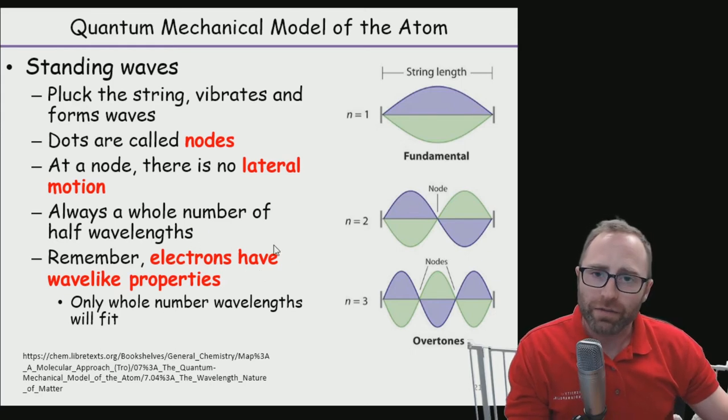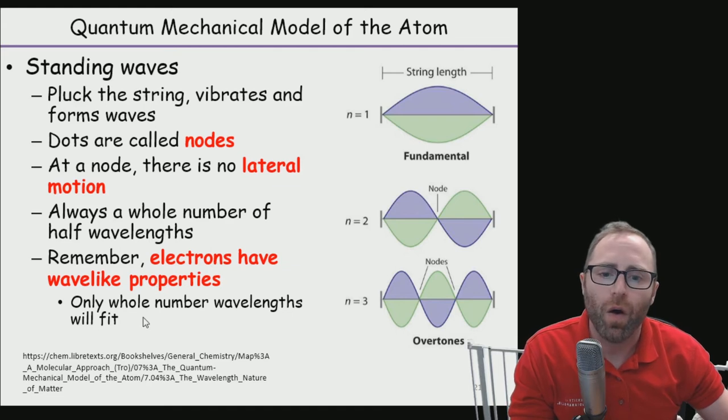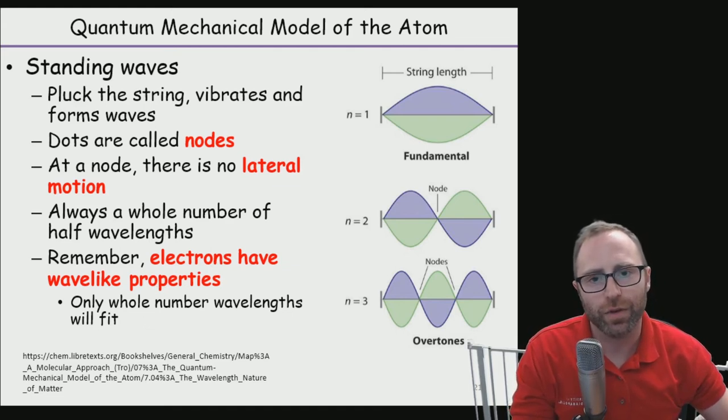So based off of the problem that we discussed in our de Broglie video, we said that electrons have wave-like properties that are fairly significant. Let's now kick that back to the simulation that we used when we talked about the Bohr model to discuss this a little bit more.